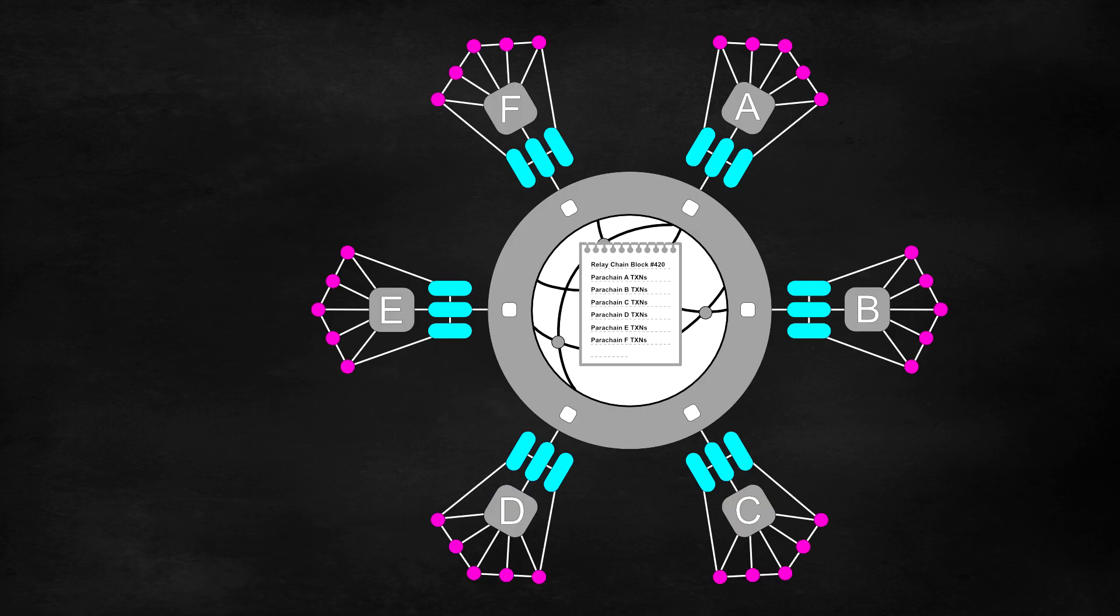These parachain blocks are then collected together and a relay chain block candidate is produced. The validators then attempt to reach a consensus on the relay chain block candidate.